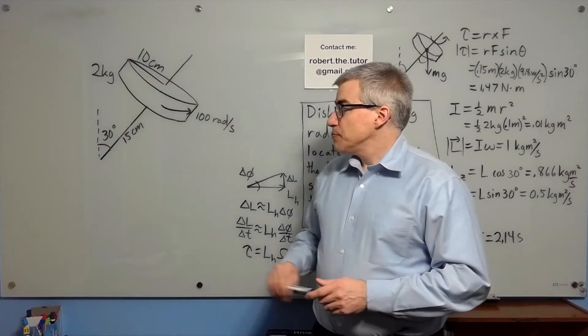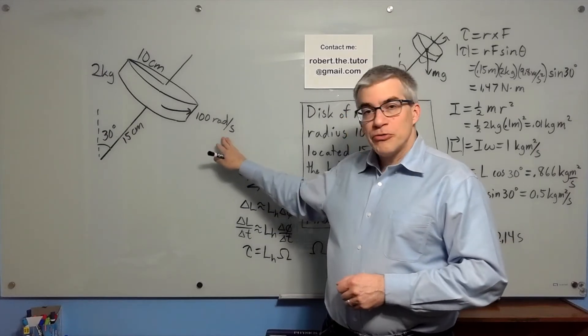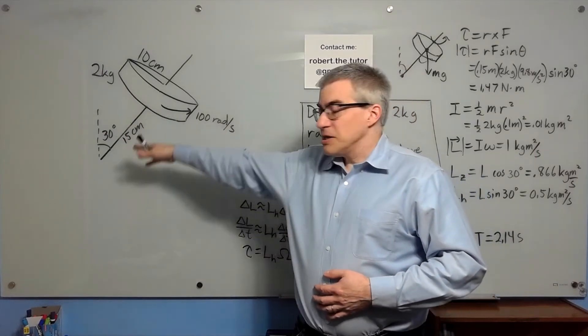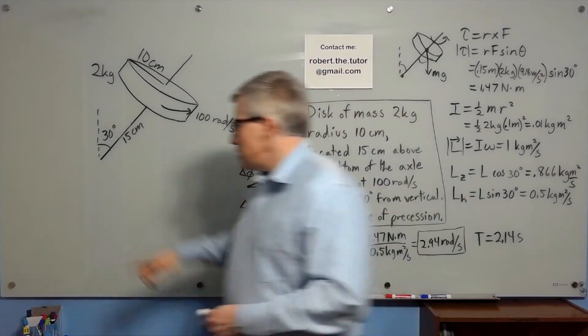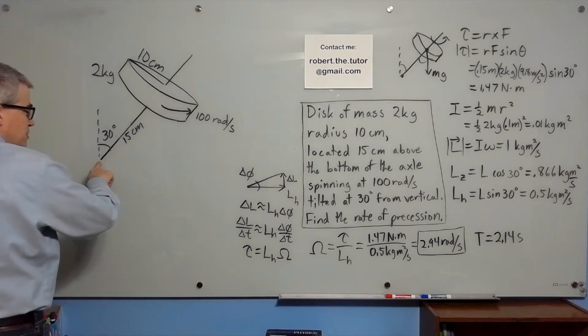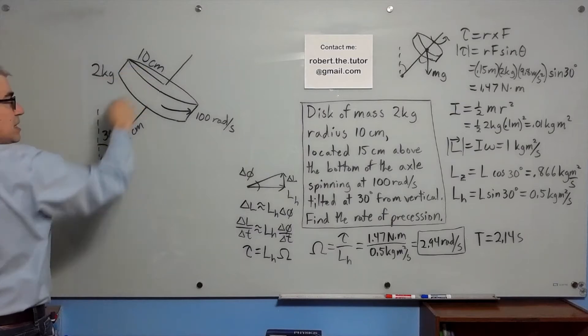Here's an example of precession. Suppose you have a spinning top. It's spinning at 100 radians per second. It's tilted at the moment at an angle of 30 degrees from the vertical. It's 15 centimeters from the pivot point to the spot where the mass is. The mass is a disk, 2 kilograms with a radius of 10 centimeters.